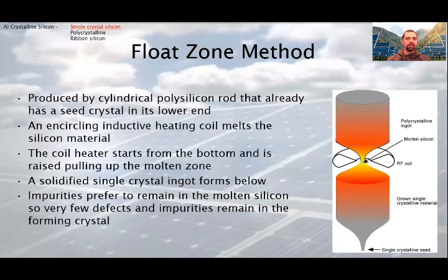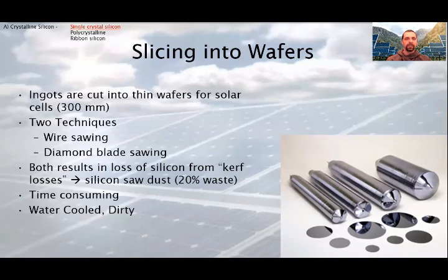The second method is the float zone method. Here, the final ingot is produced by cylindrical polysilicon rod that already has a seed crystal in its lower end. As you see on the picture, an encircling inductive heating coil melts the silicon material. The coil heater starts from the bottom and is raised, pulling up the molten zone. A solidified single crystal ingot forms below. Impurities prefer to remain in the molten silicon, so very few defects and impurities remain in the forming crystal.